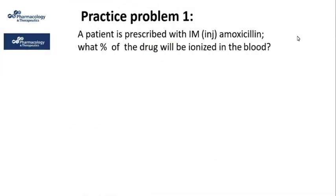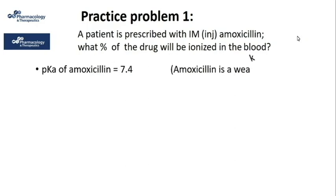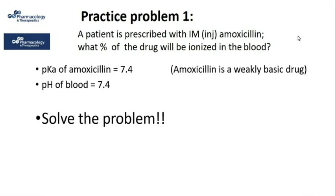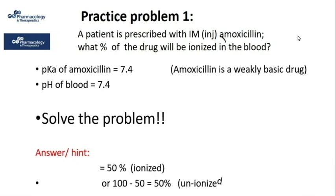Students, please participate and do some calculations. A patient is prescribed intramuscular amoxicillin. What percent of the drug will be ionized in the blood? The pKa of amoxicillin is 7.4 and it is a weakly basic drug. The pH of blood is also 7.4. For convenience, the answer is given, so please draw a conclusion for yourself.